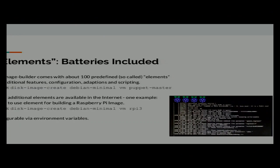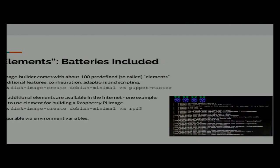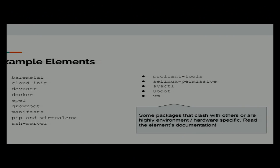Disk Image Builder itself is a modular system built around elements. Each function block is put into one element — for example, 'debian-minimal' is one element, 'vm' is one element, 'puppet-master' is one element. Hundreds of elements come directly with the image builder. There are also many elements available on the internet — for example, if you want to build an image for a Raspberry Pi you can grab that element from the internet and add it to your build.